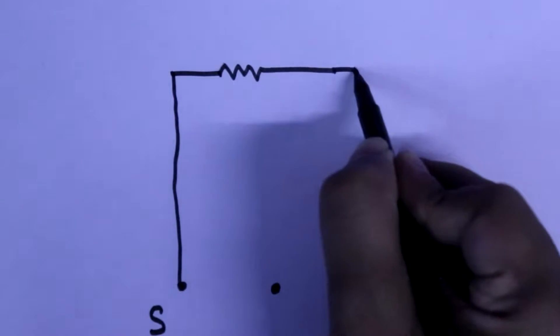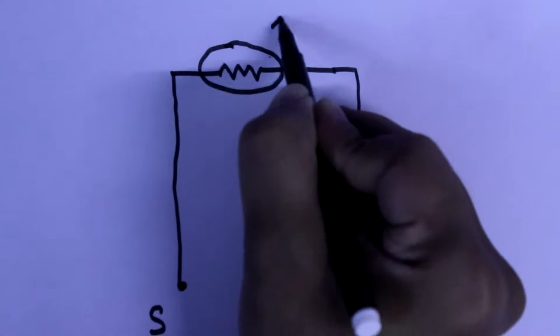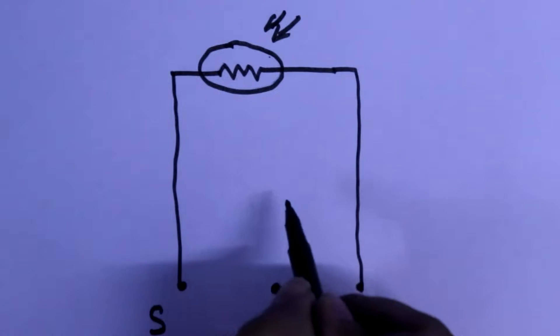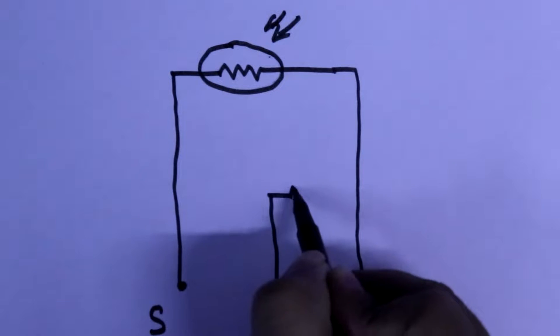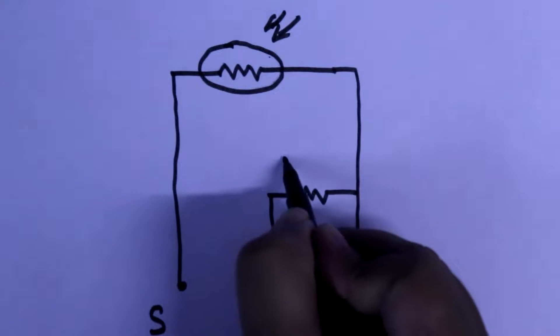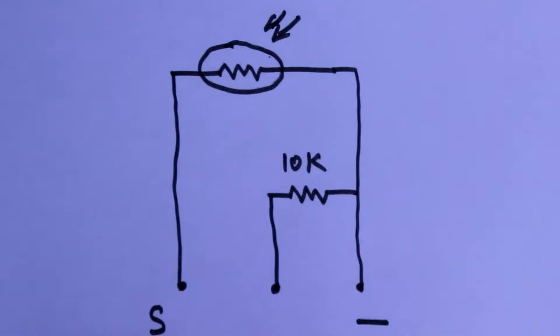This module has three pins. This pin is signal and here it is negative. The LDR is connected in between signal and negative pin. And the 10 kilo ohms resistor is connected in between the middle pin and the negative pin. So this is the module connection.